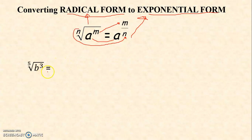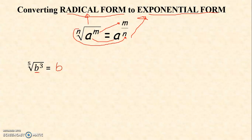Example number one: the 5th root of b raised to 3. This is the radical form because of the presence of the radical sign. We're going to rewrite it in exponential form. B is your radicand, and that will always be your base. Always remember that when we are talking about radical form, the exponent is a fraction.